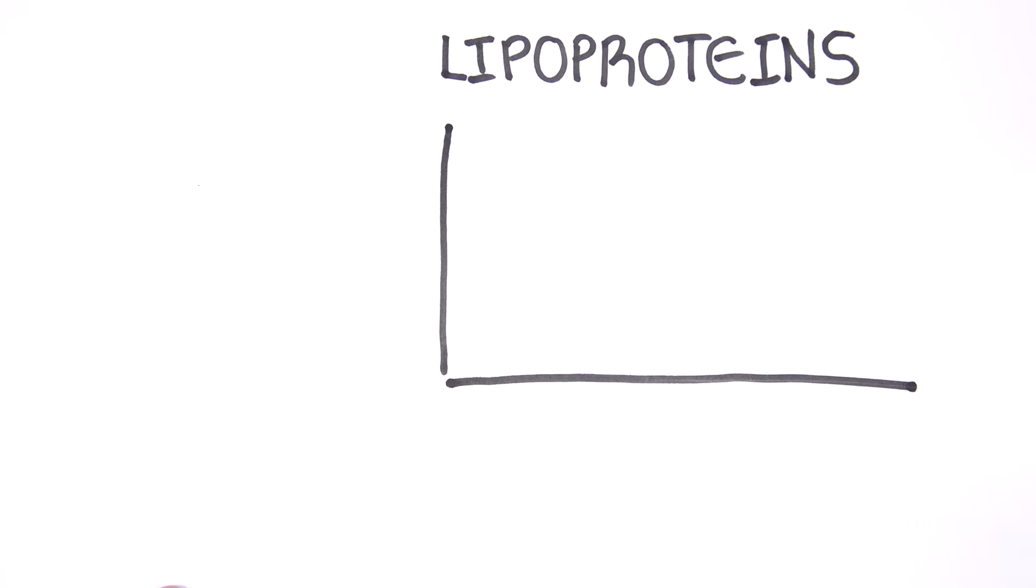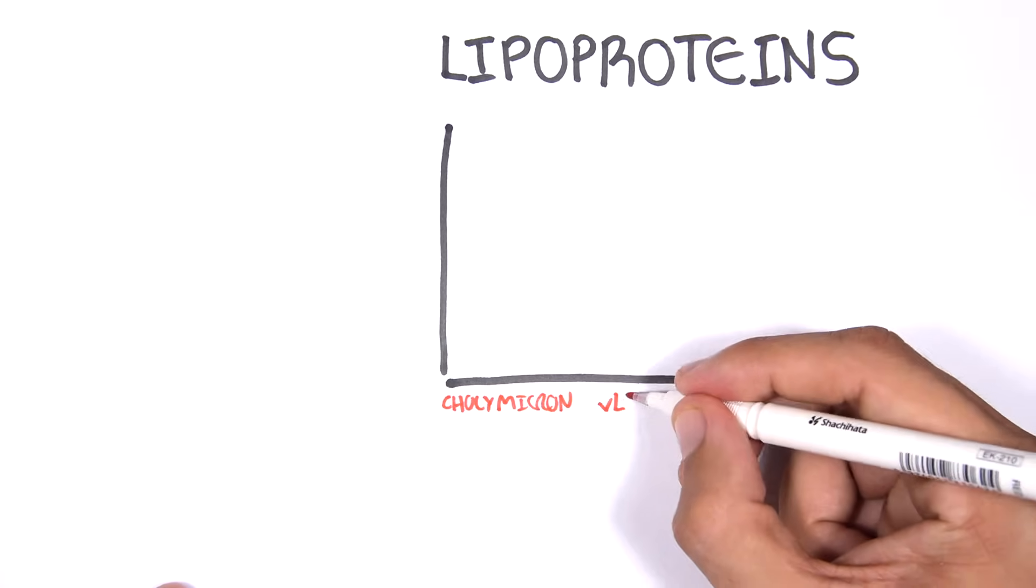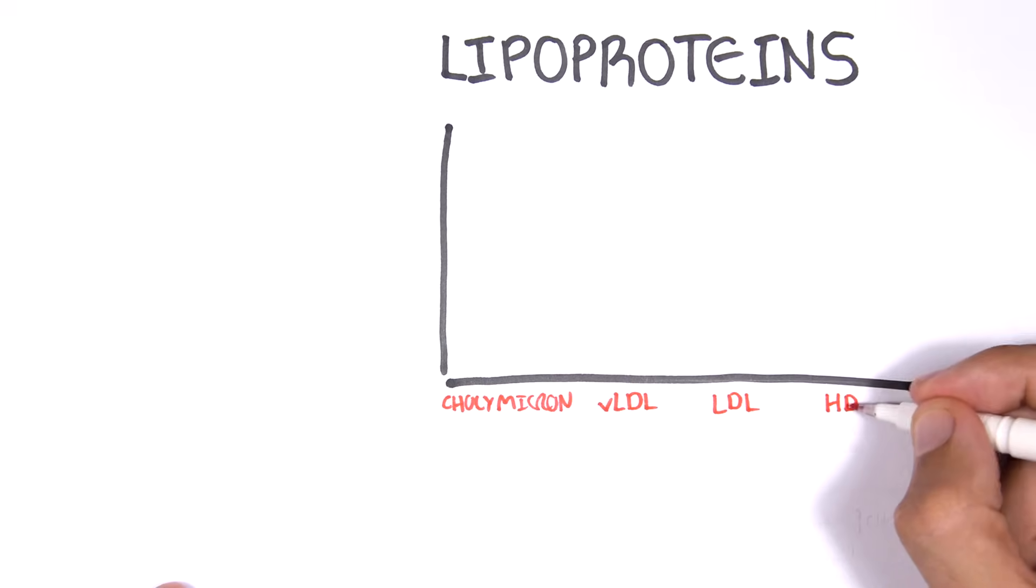There are different types of lipoproteins. You can say that there are four types: chylomicrons, VLDL (very low-density lipoproteins), LDL (low-density lipoproteins), and HDL (high-density lipoproteins).